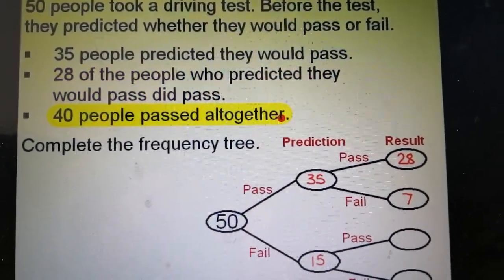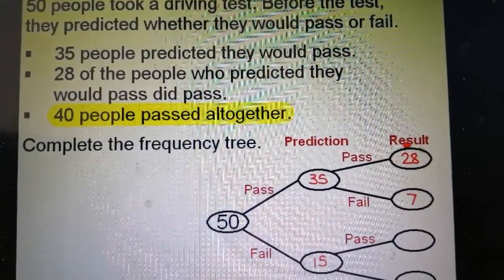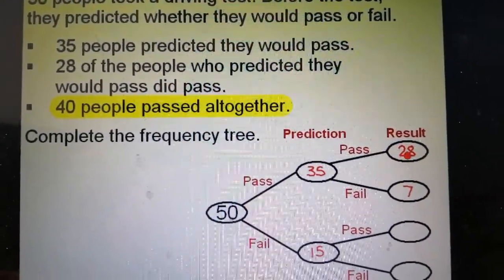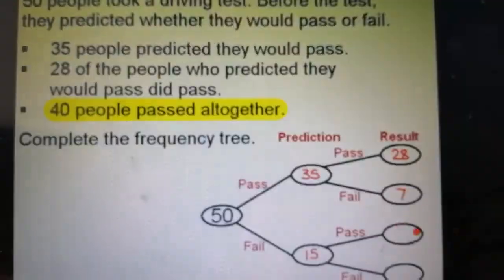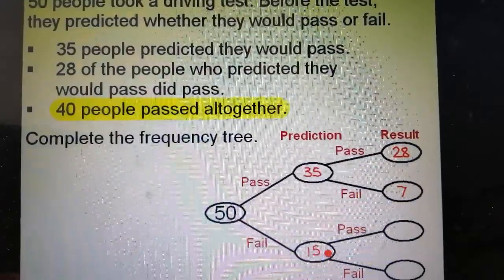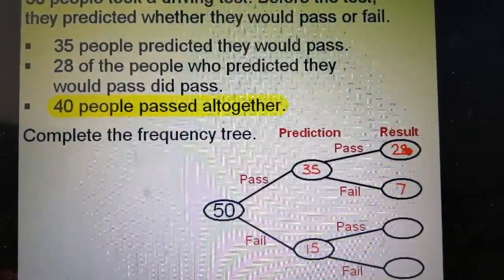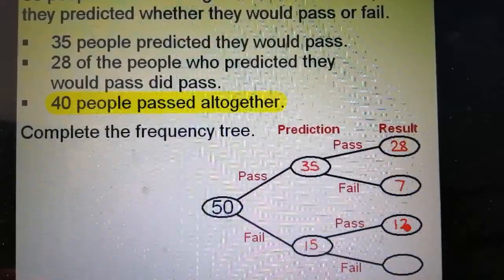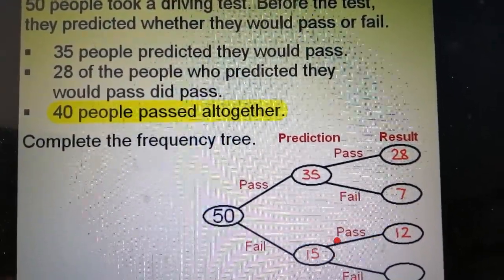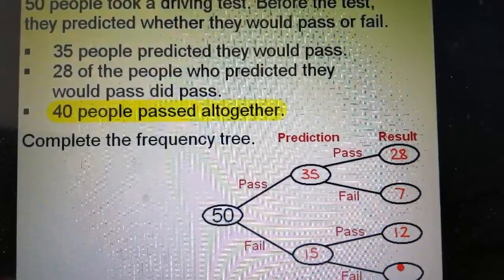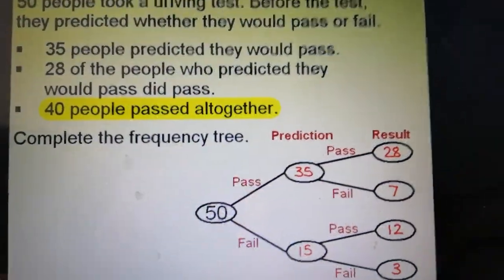This line tells me that 40 people passed altogether. I already know that 28 people passed who predicted they would, and I need to make it up to 40 with people who predicted they would fail. So 40 take away 28 is 12 — 12 of the people who predicted they would fail actually passed. That means that 3 of them did fail, and this finishes off the tree.